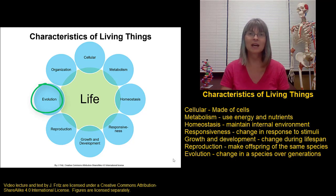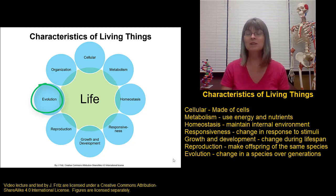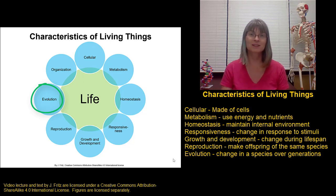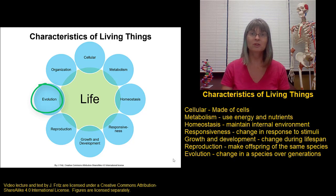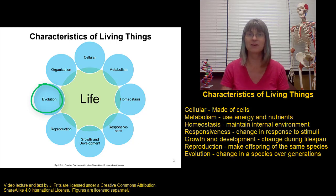Evolution is a characteristic of living things that goes a little beyond the scope of this course, because evolution is not looking at the change in a single organism over time. Evolution is looking at changes in species over time — how an entire species evolves or changes over many generations. We can see the results of evolution in human populations; for example, the evolution of lactose tolerance. The ancestral state of humans is to be lactose intolerant, to not consume lactose, the sugar in milk, as an adult. However, due to changes in human populations over time, now a large section of the world's population is able to comfortably consume lactose as adults. That's a change in the population over time, or an example of evolution.